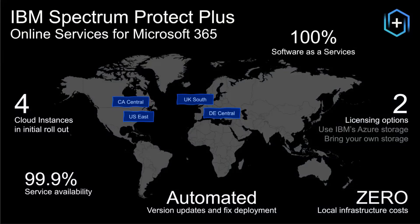IBM Spectrum Protect Plus Online Services is a 100% software as a service solution, meaning there is no infrastructure required on the customer side — zero infrastructure cost for the customer. Updates and fix deployments are fully automated and handled by IBM, so there is no need on the customer side to update the service. Due to the use of Azure environments and infrastructure, service availability is counted at 99.9%. In the initial rollout, four cloud instances will be enabled: one in US East, one in Canada, one in Germany, and one in the UK.